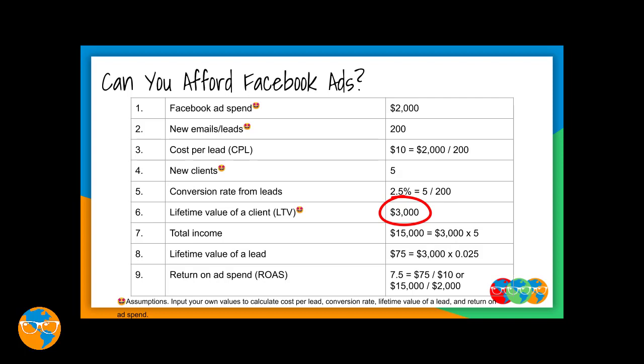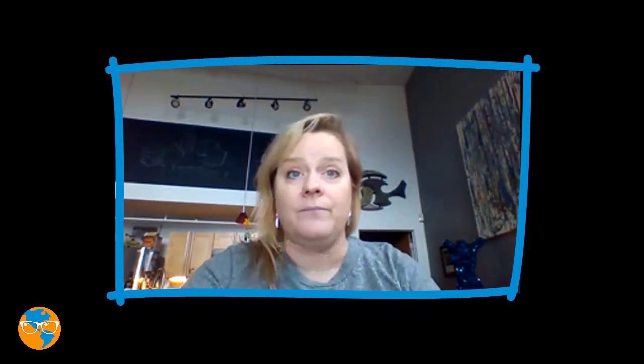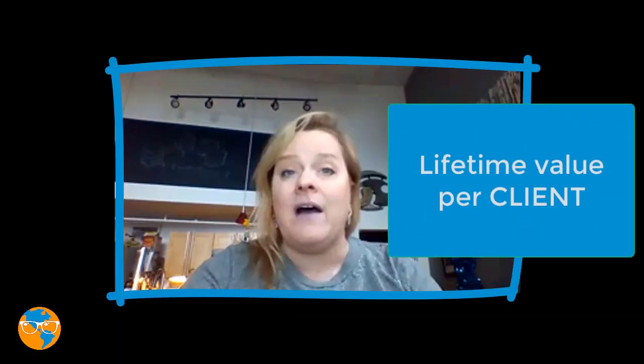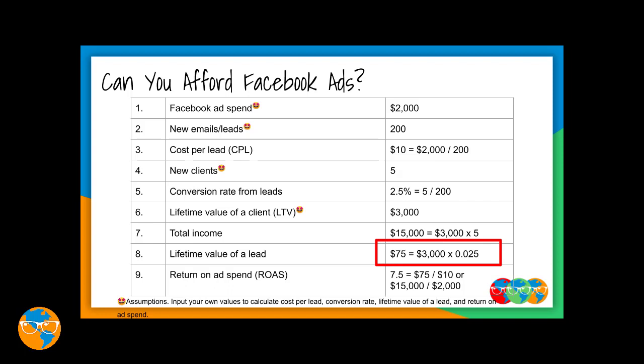Let's assume that has a price tag of $3,000 per client. Go back to the math: if you can expect $3,000 in income per client on average and you get five new clients, that's a gross income of $15,000. To know if you can afford Facebook ads, you must convert this lifetime value per client into the lifetime value per lead. Take the lifetime value per client of $3,000 and multiply by your conversion rate of two and a half percent — that gets you $75 as the lifetime value of a lead into your business.